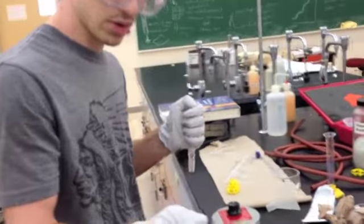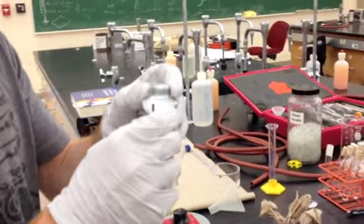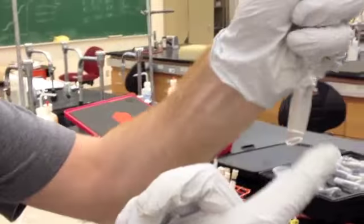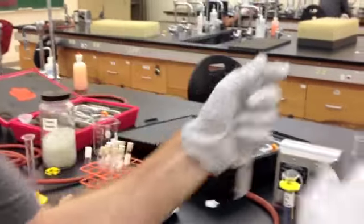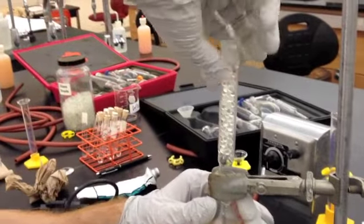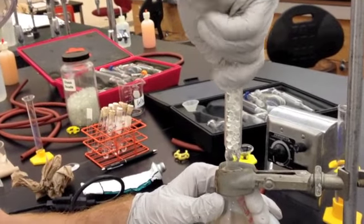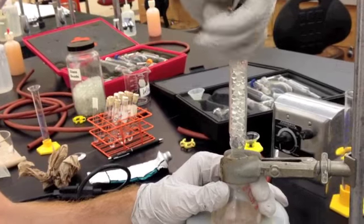Now, before adding it to the round bottom flask, you want to grease your joints a little bit. Take a little bit of grease, put it on the joint, and then with the round bottom flask, just circle it around until you get a seal, and you'll see the difference.